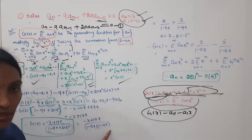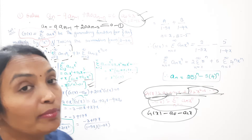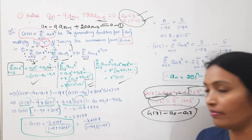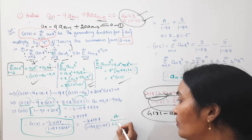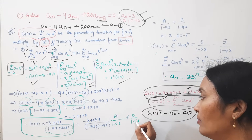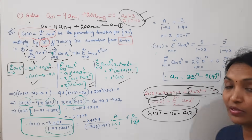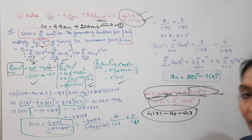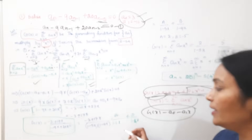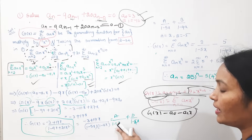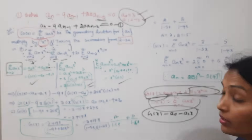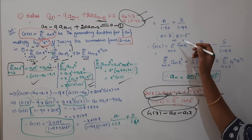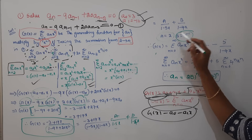Simplifying the denominator: we have roots giving factors (1 minus 4x)(1 minus 5x). We use partial fractions: this equals A over (1 minus 5x) plus B over (1 minus 4x). Substitute x equals 1/5 and x equals 1/4 to find A and B.